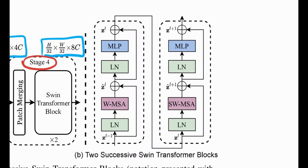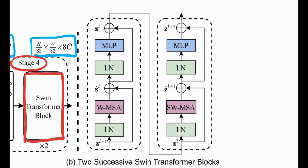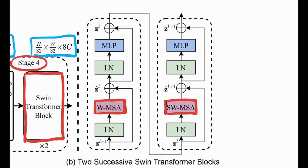This idea is shown in Figure 3b, which shows two successive Swin Transformer blocks. Inside each Swin Transformer block we have two layers: the first is Window Multi-Head Self-Attention, which divides feature maps into windows; the second is Shifted Window Multi-Head Self-Attention, which performs the shift we just described.